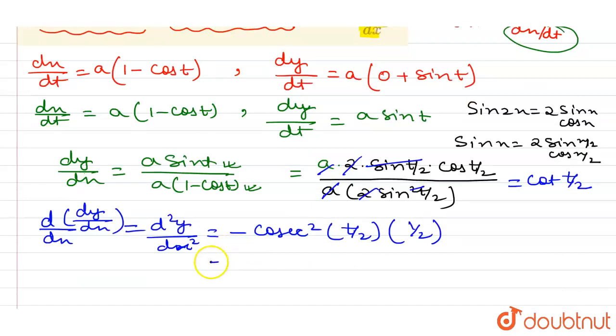So on simplifying, I can write minus csc²(t/2) divided by 2. So this equals d²y/dx², so this is the answer of the given question.